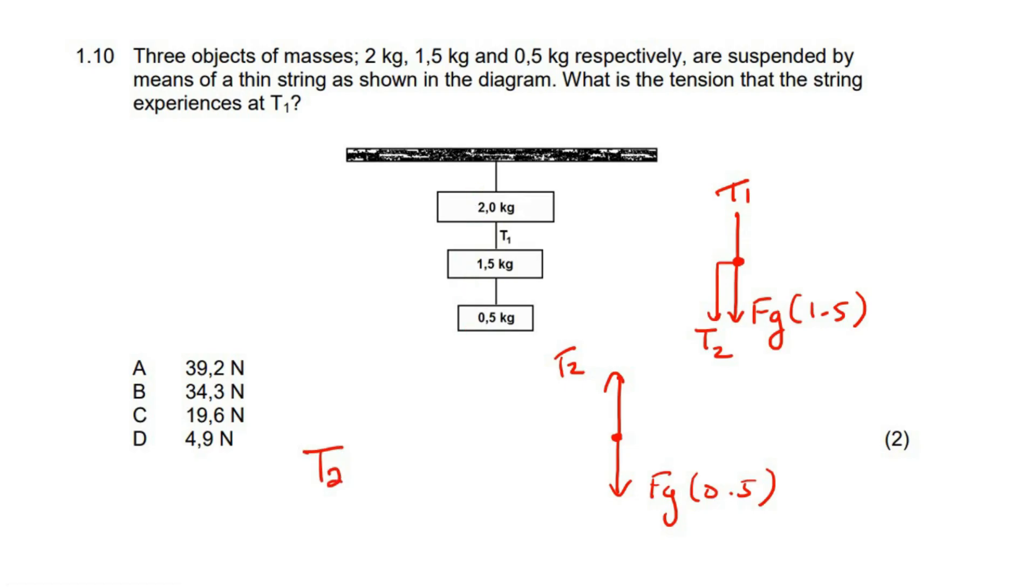So we can just say that T2 is the same as the FG of this object, which is 0.5 multiplied by 9.8, and that's going to be 4.9 newtons.